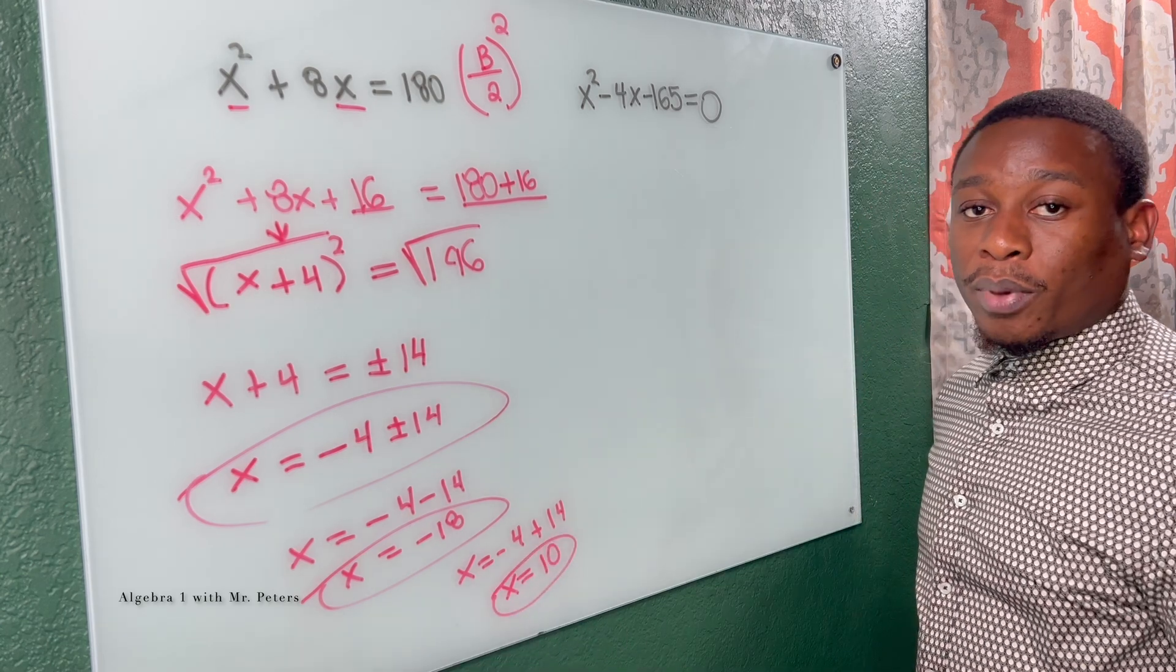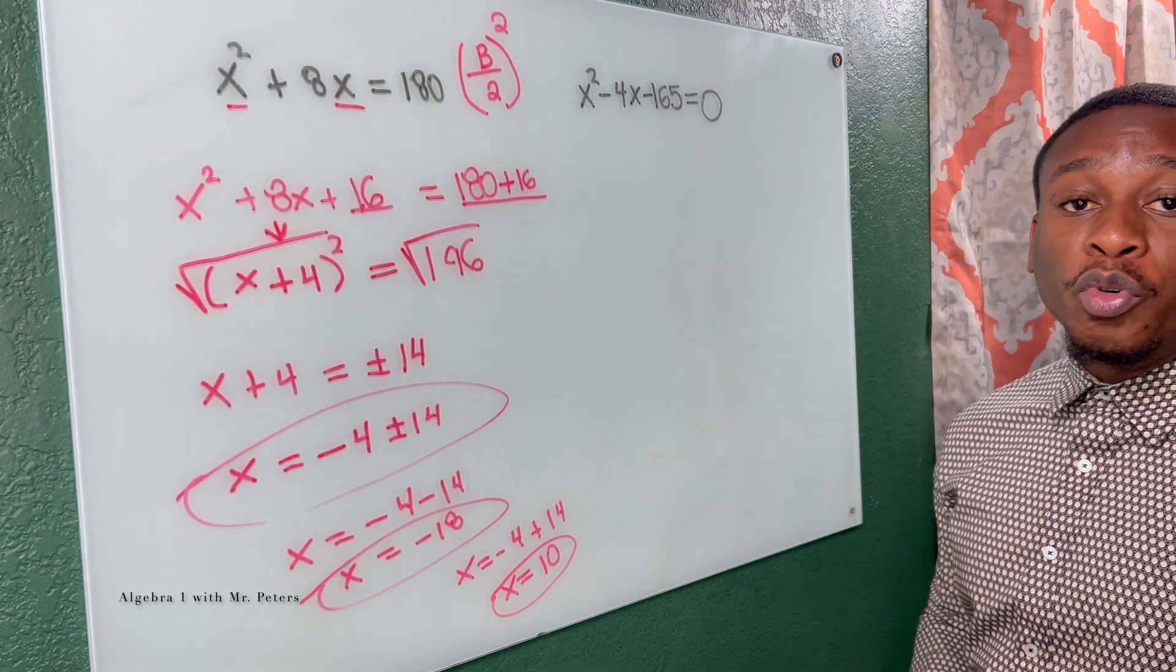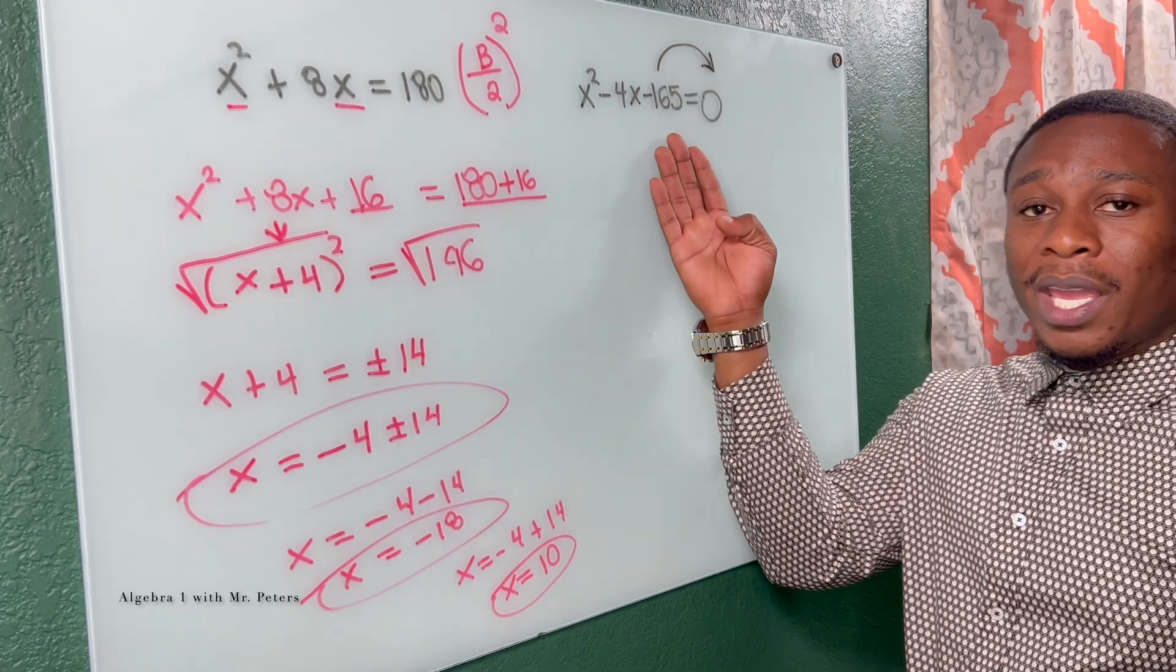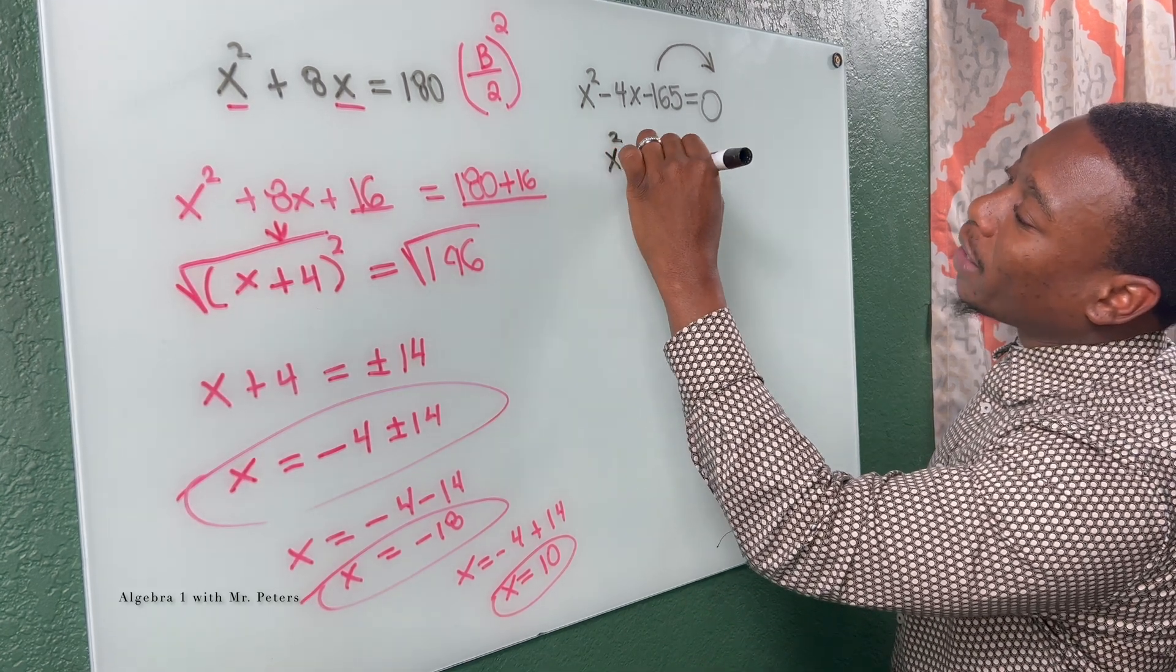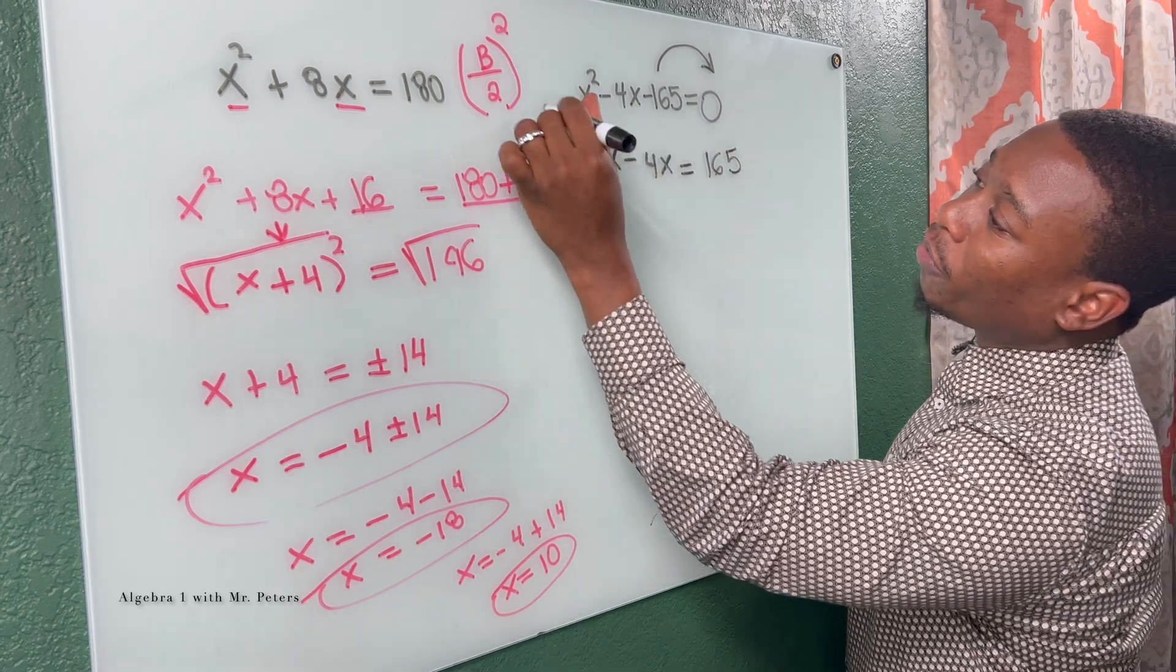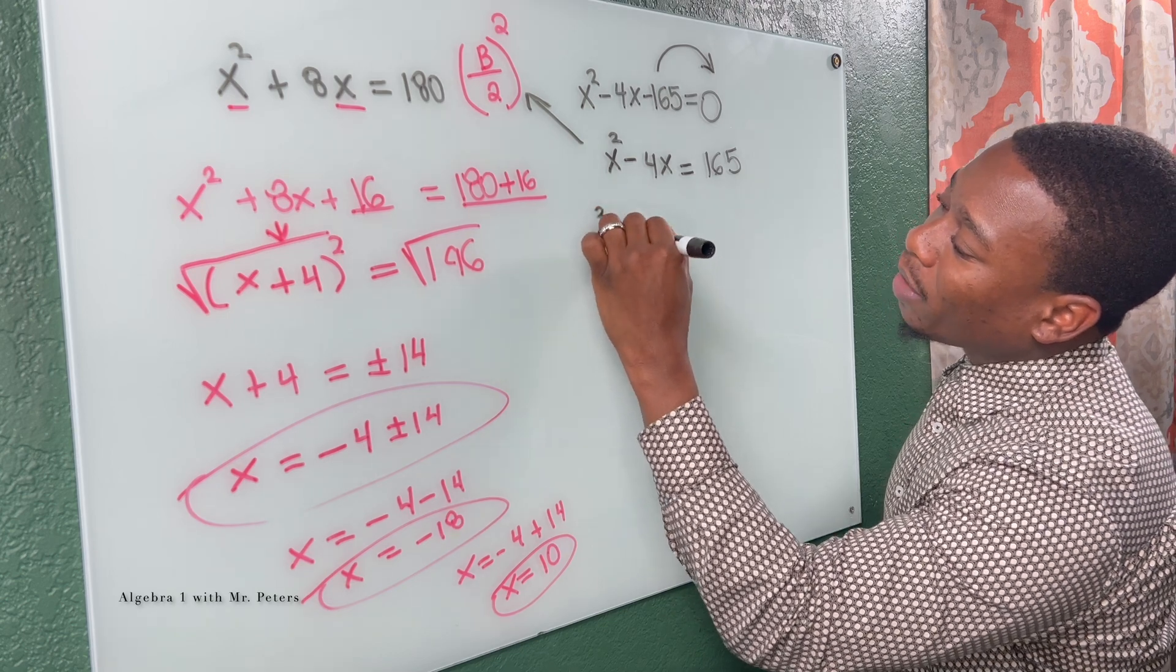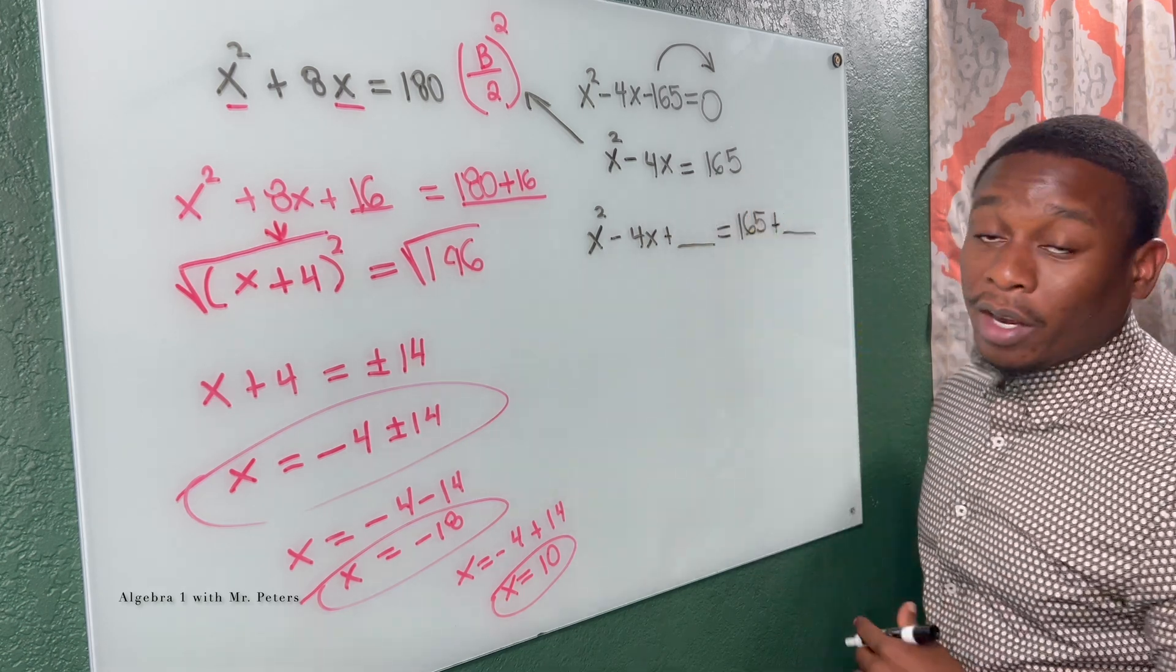So this is our first example on completing the square. Now our second example's different because we have to move C over. My first thing I wanna do for this problem is add 165 to both sides. We should know we can't factor this using the regular factoring methods. So now I have X squared minus 4X is equal to positive 165. We're gonna follow the same formula to create the perfect square trinomial.